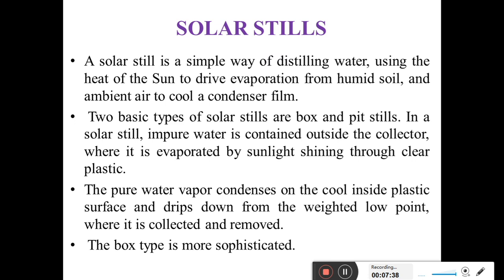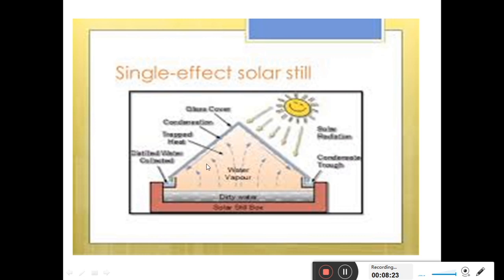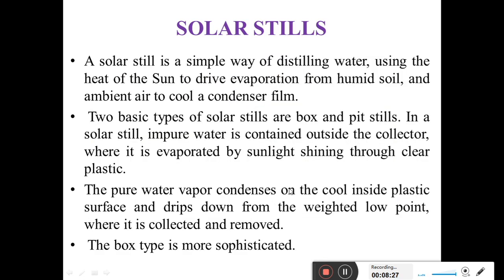The next method is the solar still method. The solar still is a very simple way of distilling water, using the heat of the sun to drive evaporation from the humid soil and ambient air to cool the condenser. There are two basic types of solar stills: the box type and the pit type. In a solar still, impure water is contained inside the collector where it is evaporated by sunlight shining through a clear plastic cover. The pure water vapor condenses on the cool inside plastic surface and drips down from the wetted low point where it is collected and removed.